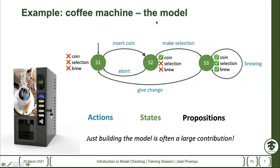One possible abstraction of the internals could be this: we can build a three-state machine starting at S1, where at some point we insert a coin. At that point we can either give up or make a selection, and in S3 we can start brewing coffee and possibly get change back. We also have propositions — coin, selection, brew — which are boolean variables we can check in each state. These models consist of sets of states, a set of actions connecting states, and a set of propositions checkable in each state.